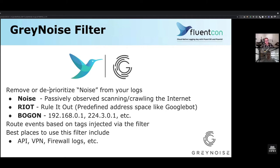The reason we wanted to do this is to remove or deprioritize noise from your logs. We break noise down in this specific plugin into three categories: noise, riot, or bogon. Noise is passively observed scanning — someone passively observed scanning or crawling the internet. In the case of an SSH log on a Linux server, somebody might be using an SSH brute forcer scanning the entire internet with a collection of usernames and passwords. It isn't a targeted attack, but it generates a lot of noise that might look like an attacker.